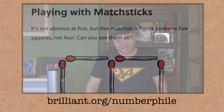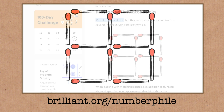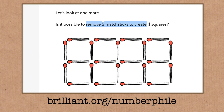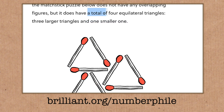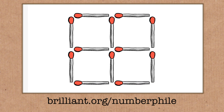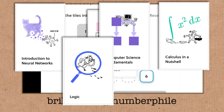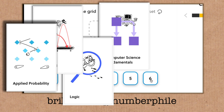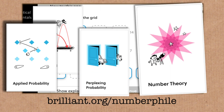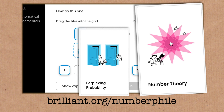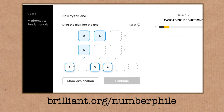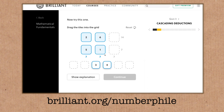Now when I was younger, I was taught not to play with matches like these, but I think we can make an exception for today's episode sponsor, Brilliant. Can you see the 5th square in this arrangement? Can you make 4 squares here by removing 5 matches? These are examples of the sorts of puzzles you'll find on Brilliant, and there are great courses too. Go to brilliant.org/numberphile where you can get 20% off Brilliant's premium subscription, which unlocks all the good stuff. Always be careful and thoughtful with matches — real ones and mathematical ones.